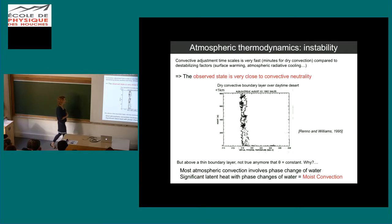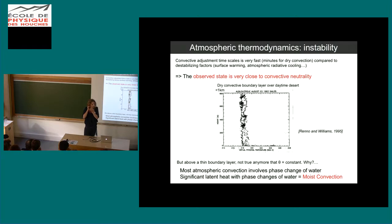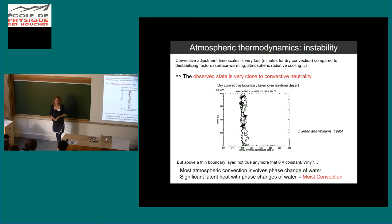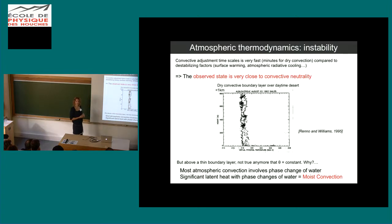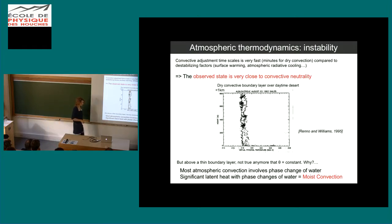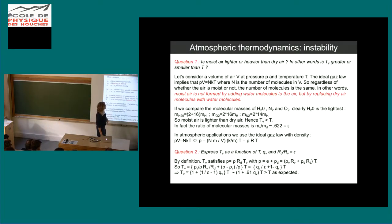First, we have to go back through the physics of moist convection. Yesterday we pretty much went as far as we could without talking about condensation. We did start adding moisture to account for virtual effects — the fact that if you have water vapor in air, it's lighter. We saw that you could go back to the framework of dry convection by only changing the temperature, using virtual temperature. But once you have condensation, we have another degree of complexity that we have to account for.